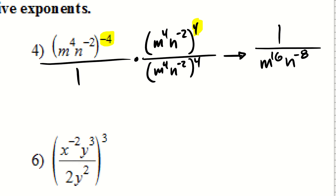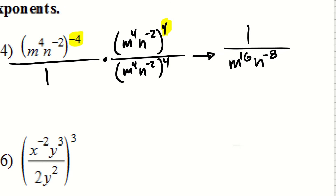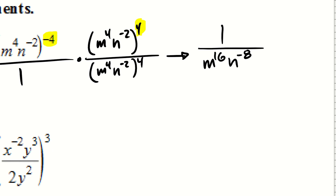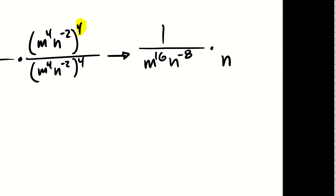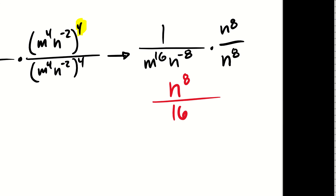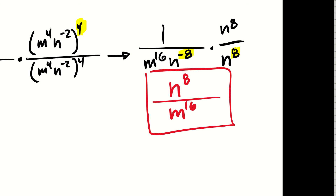I thought I got rid of the negative exponent when I dealt with the four, but N to the negative eighth is still there. All I do is relocate those eight factors of N into the numerator, making it N to the eighth. In the denominator, I have M to the sixteenth, and N to the negative eighth times N to the positive eighth is N to the zero, which is one. So the final answer is N to the eighth over M to the sixteenth.